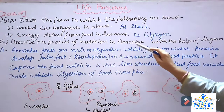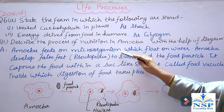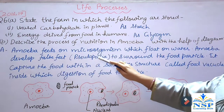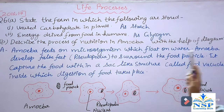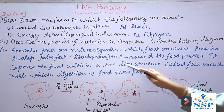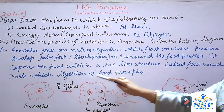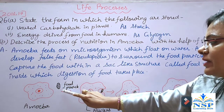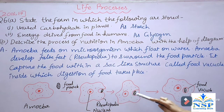Describe the process of nutrition in amoeba with the help of a diagram. Amoeba feeds on microorganisms which float on water. Amoeba develops false feet or pseudopodia to surround the food particles. It captures the food within a sac-like structure called a food vacuole, inside which digestion of food takes place. When amoeba surrounds pseudopodia around the food particles, it captures them and forms the food vacuole.